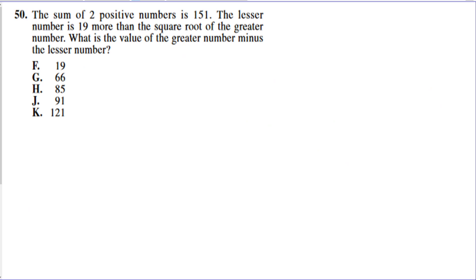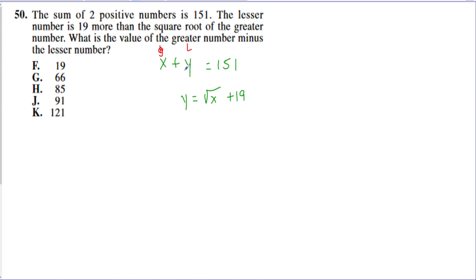Problem 50 is fairly complex. The sum of two positive numbers is 151. The lesser number is 19 more than the square root of the greater number. What is the value of the greater number minus the lesser? I'll write x plus y equals 151, where x is the greater and y is the lesser. Then the second equation is y equals the square root of x plus 19, since the lesser is 19 more than the square root of the greater.